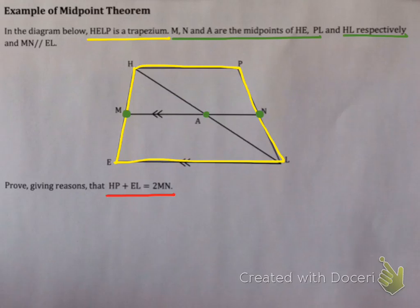What we're trying to prove is that HP plus EL equals 2MN. Now as soon as I see two sets of midpoints, I know two things: number one, the lines are parallel, and number two, the line that joins the midpoint is half of the base of the triangle.